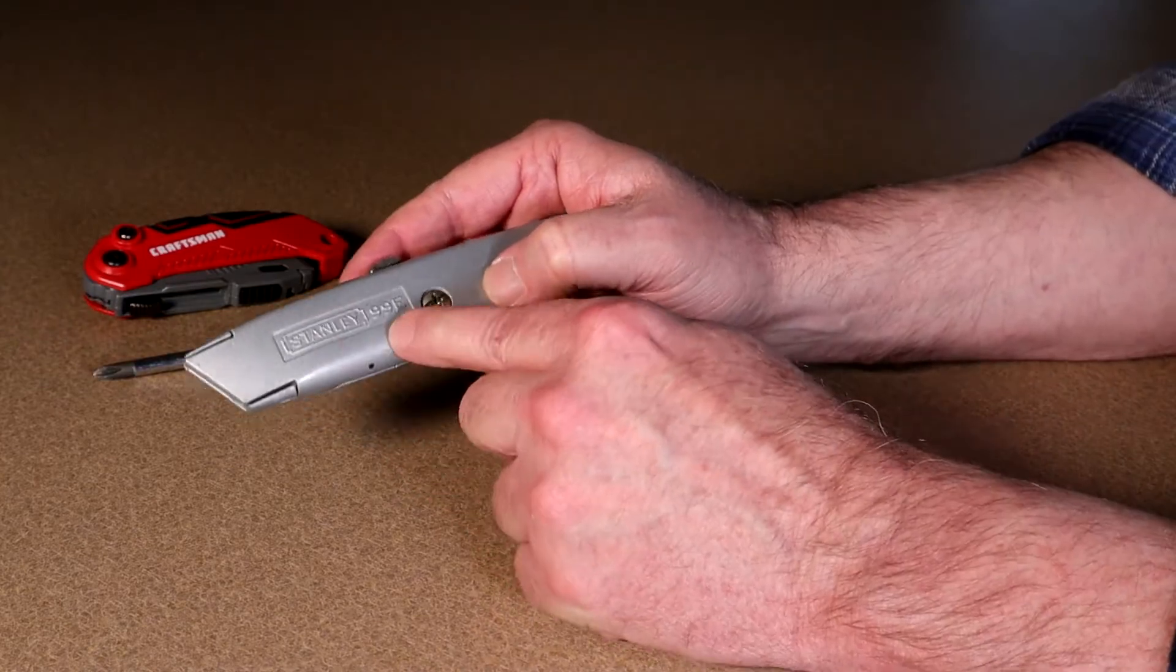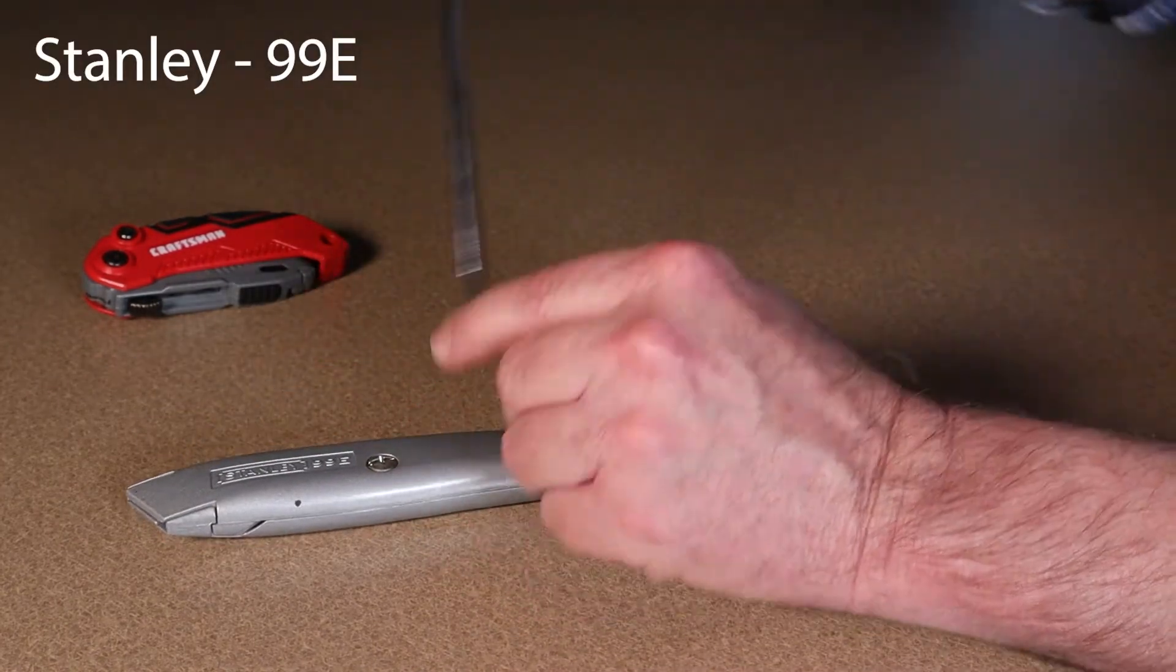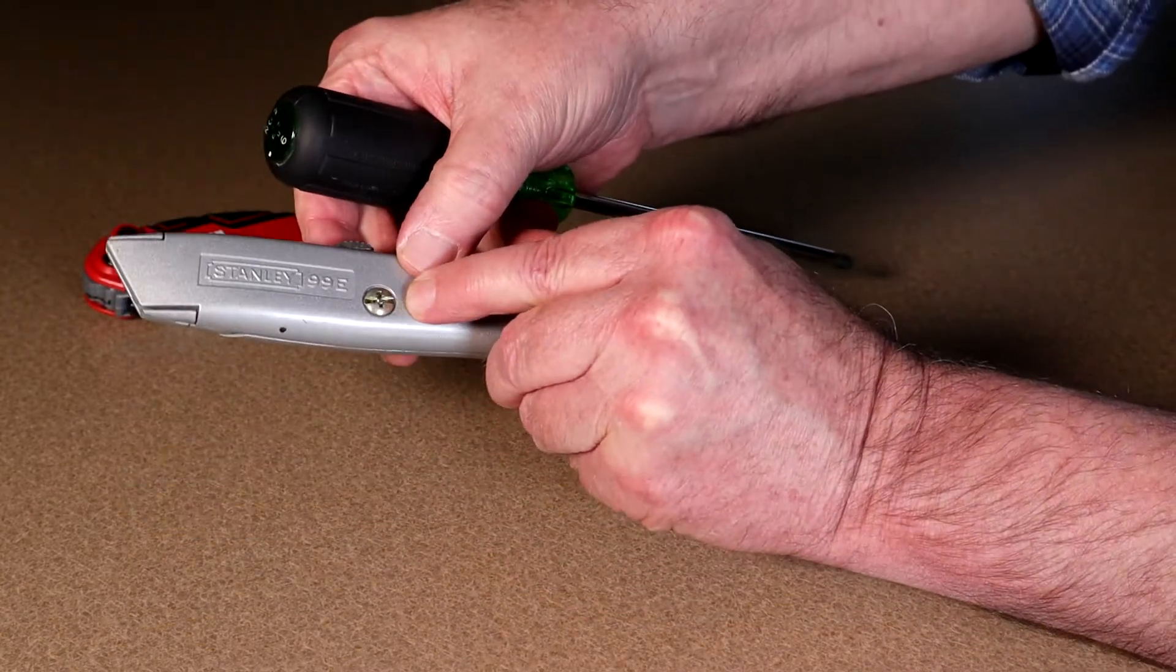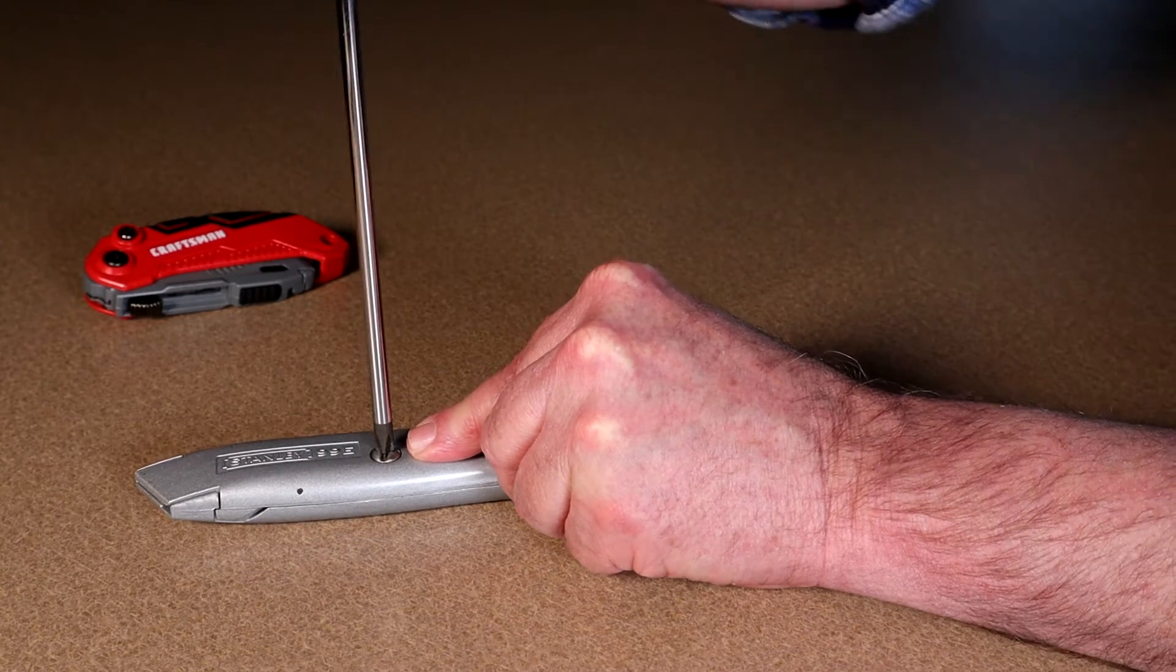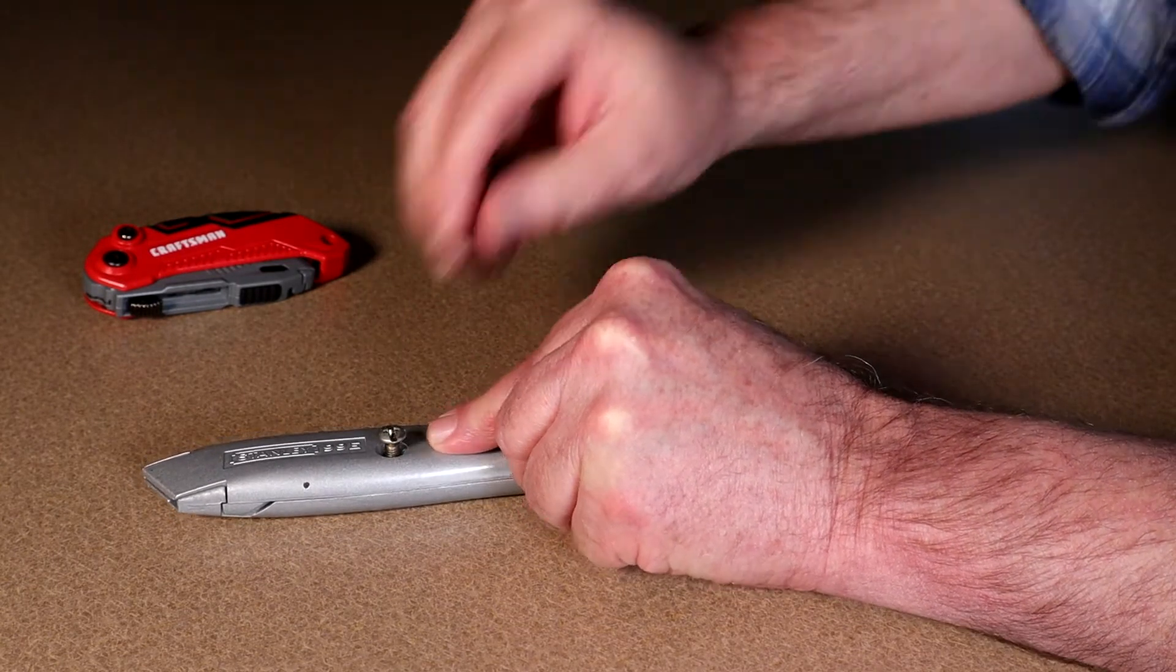The old style Stanley model 99E. To change the blade in it, you just take a screwdriver. This is designed so you can use a Phillips or flathead, it doesn't matter. You unscrew one screw, take that screw out.